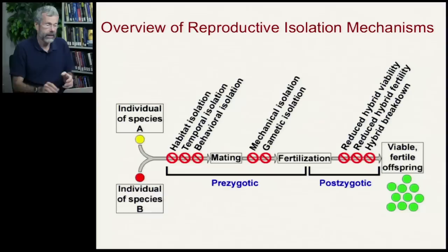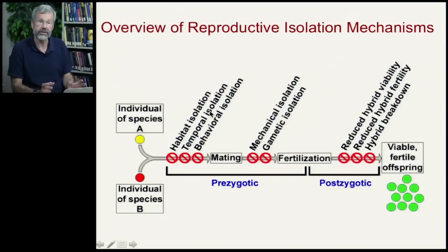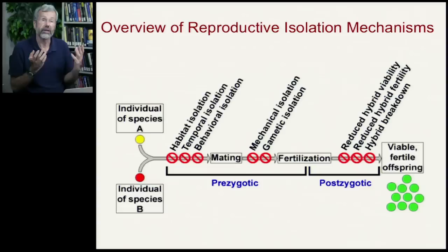Now let's bring all of these concepts together in a final overview. Reproductive isolation can occur before fertilization. Individuals of two different species may not be able to mate in the first place because of habitat isolation — for example, squirrels on the north side of the Grand Canyon versus the south. There might be temporal isolation: they might live in the same pond but their mating seasons occur in different months. Or there might be behavioral isolation — they don't recognize each other's calls when it's time to mate. All of these prevent mating from happening in the first place.